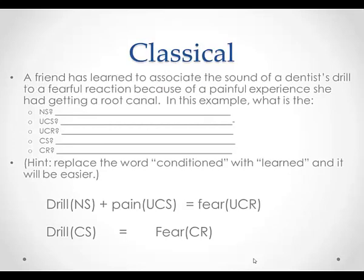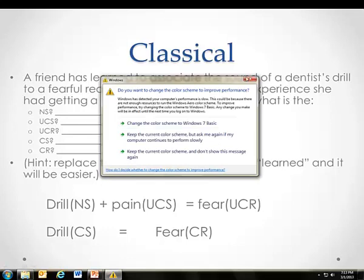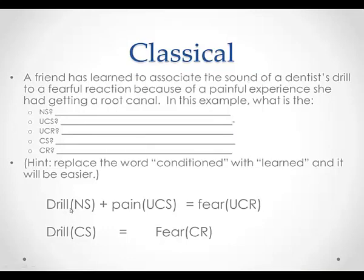Okay, so here's the answer. The NS is the drill because it is neutral — it has no meaning to this friend before she was born. The pain is the UCS, and that causes the fear — the UCR. Remember, the pain and the fear are the reflex. The unconditioned stimulus and the unconditioned response are the reflex. Pain causes fear naturally. But then when she connects the pain with the drill, the drill becomes the conditioned stimulus because it causes the fear, the conditioned response.